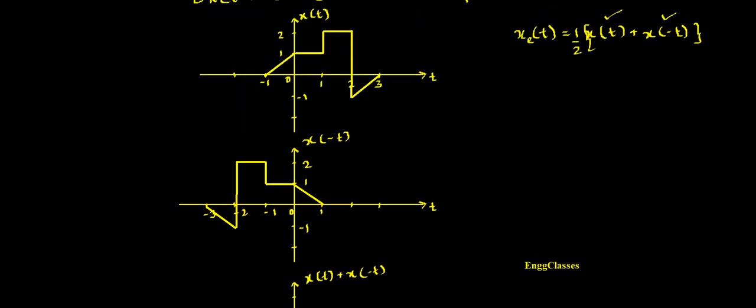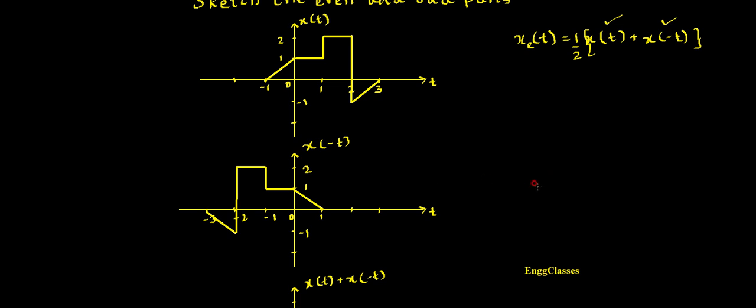I can call the addition of these two signals as x(t) plus x(-t). That is the new signal. The combined signal spans from the extreme left at minus 3 to the extreme right at plus 3. From minus 3 to minus 1, x(t) is 0, so I add 0 plus x(-t), and this part retains the shape of x(-t).